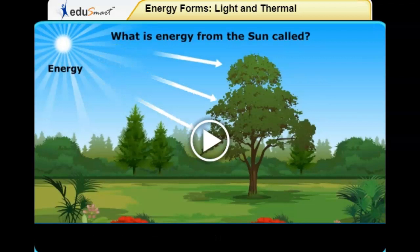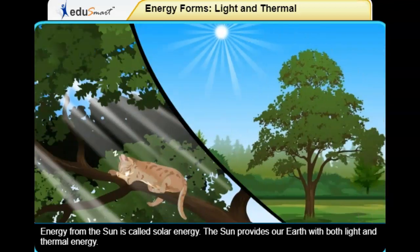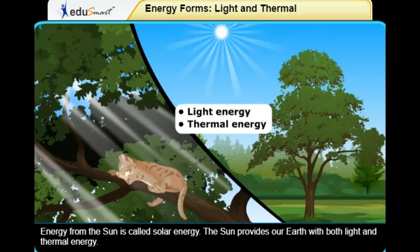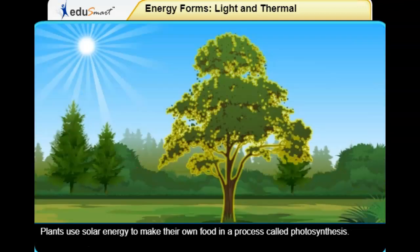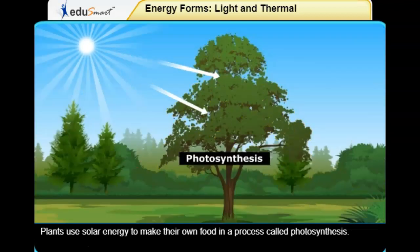What is energy from the sun called? Energy from the sun is called solar energy. The sun provides our Earth with both light and thermal energy. Plants use solar energy to make their own food in a process called photosynthesis.